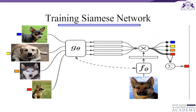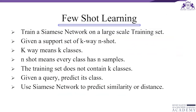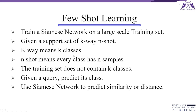To summarize Siamese networks for feature learning: the basic idea is to first train a Siamese network on a large-scale training set. The Siamese network learns the similarity and difference between things. What makes this different from standard supervised learning is that the query class does not appear in the training set. We must provide additional information like a support set. The support set is called K-way and N-shot — K-way means K classes, and the more classes, the harder the prediction.